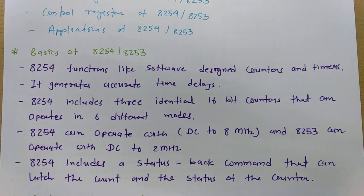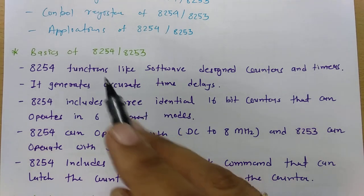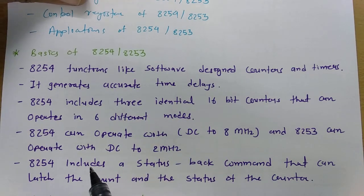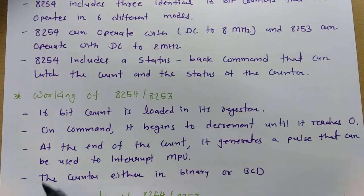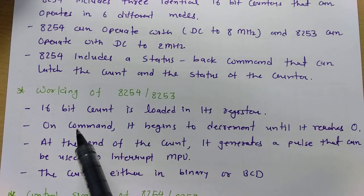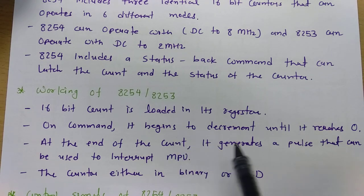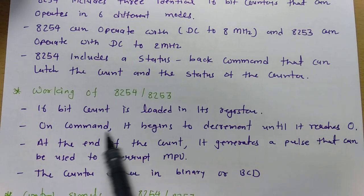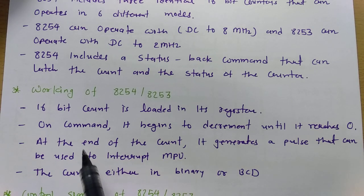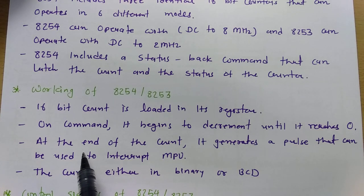Now let us understand how 8254 functions. It has 3 identical 16-bit counters. First, a 16-bit count is loaded into its register. On receiving a command, it begins to count by decrementing until it reaches 0. At the end of the count, it generates a pulse that can be used to interrupt the microprocessor.